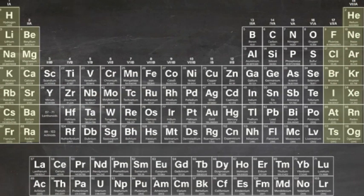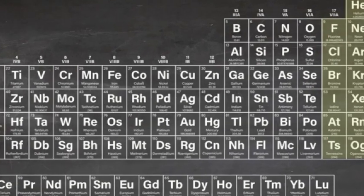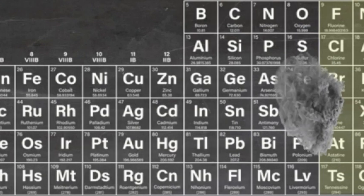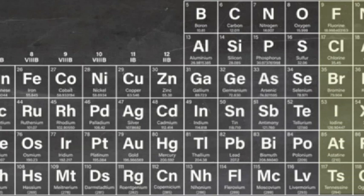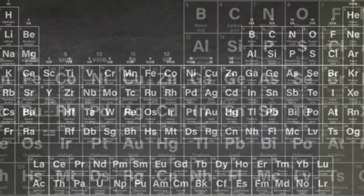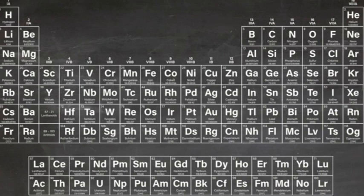These groups usually have names. For example, group 17 are known as the halogens. Elements in the same group also have similar chemical properties. For example, the halogens form acidic fumes when they react with hydrogen. Knowing these groups and the elements in them, as well as their common properties, is useful knowledge for any quizzer.